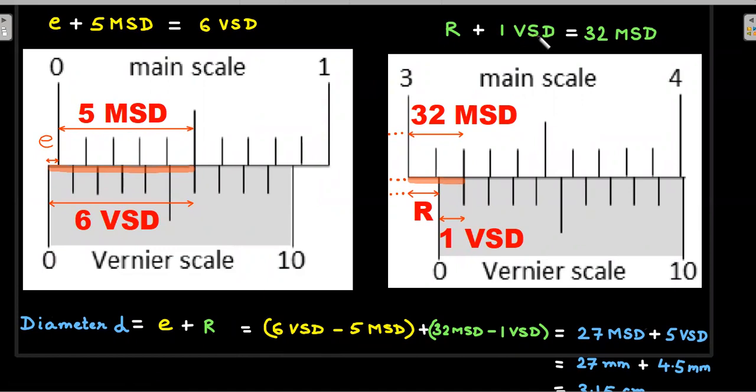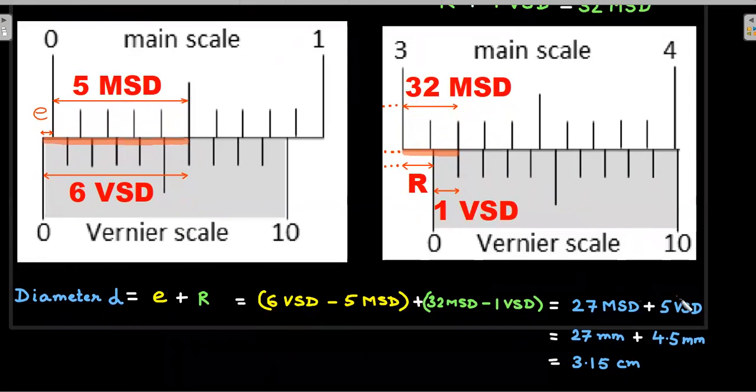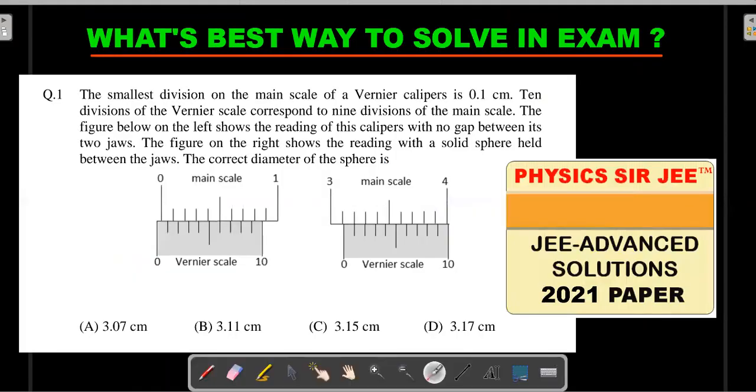What's the value of R? R is 32 MSD minus 1 VSD. Just substitute these values: 32 minus 5 is 27 MSD and 6 minus 1 is 5 VSD. Remember, each MSD is 1 mm, each VSD is 0.9 mm because he said 9 MSD is 10 VSD. So it's easy to calculate 4.5 and you'll end up getting 3.15 centimeters.